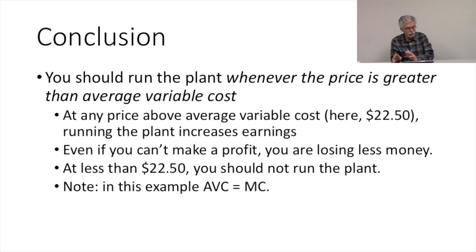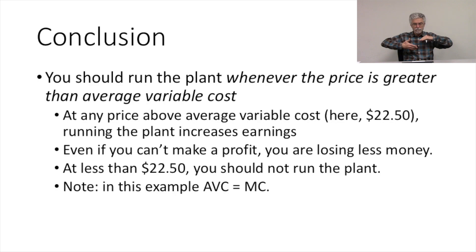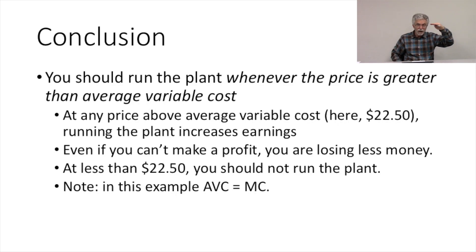So what is our conclusion? You should run the plant whenever the price you can get is greater than the average variable cost. If your price is lower than the average variable cost, you would turn the plant off. If the price offered is greater than the average variable cost, it's worth running it because you're making up some of those fixed costs — you're losing less money. If you can't get more, it's still worth running the plant because you'll be paying some of those fixed costs.